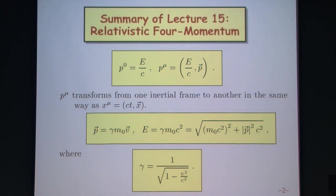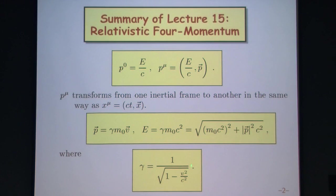The relativistic definition of momentum, as it relates to velocity, is that it equals gamma times the rest mass times the velocity, where gamma is the Lorentz contraction factor: 1 over the square root of 1 minus v squared over c squared. The energy of a particle relativistically is gamma times m₀ times c squared, and can also be written as the square root of m₀c² squared plus the momentum squared times c squared.